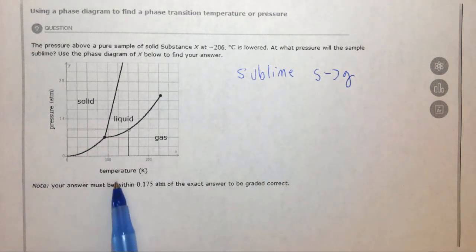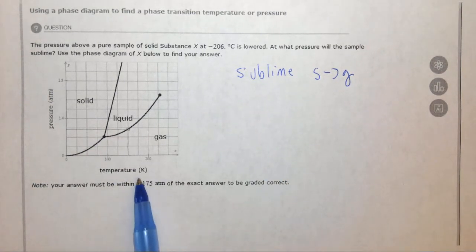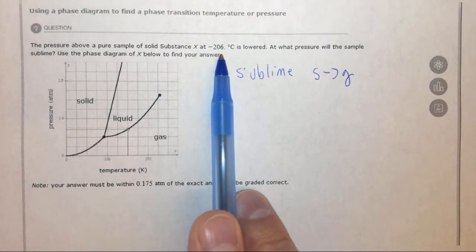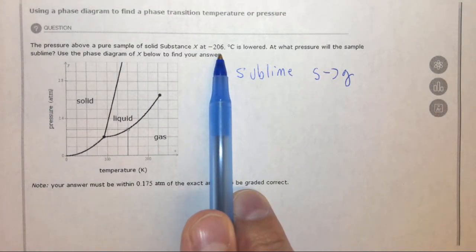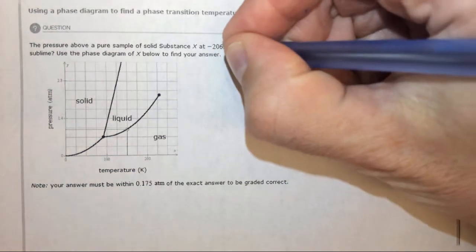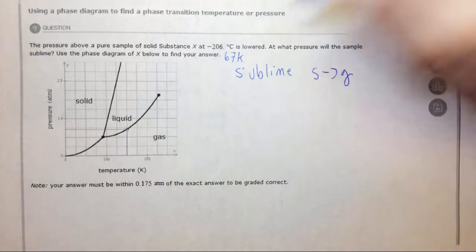The first thing I noticed is the temperature on this axis is in Kelvin and the temperature we're given is in Celsius. So we need to add 273 to that and we end up with 67 Kelvin.